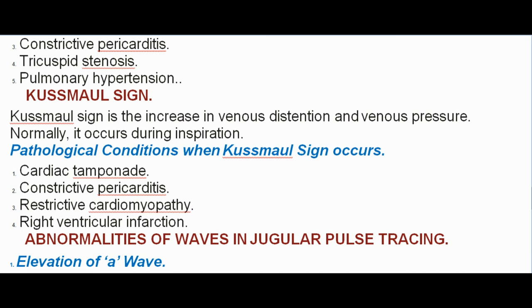Tricuspid stenosis and pulmonary hypertension. Kussmaul sign: Kussmaul sign is the increase in venous distension and venous pressure. Normally, it occurs during inspiration. Pathological conditions when Kussmaul sign occurs: cardiac tamponade, constrictive pericarditis, restrictive cardiomyopathy, and right ventricular infarction.